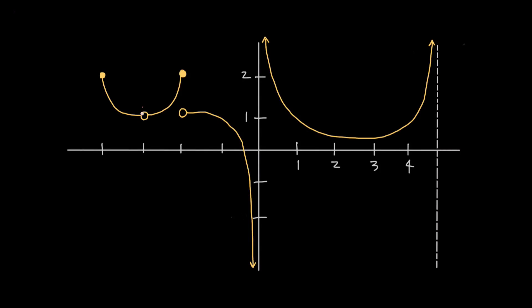These could be point discontinuities like this, jump discontinuities like this, infinite discontinuities like this, or endpoint discontinuities like this.